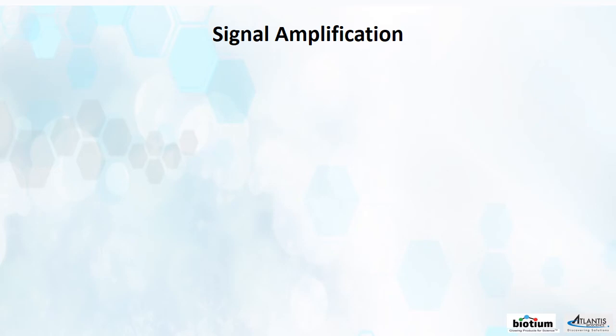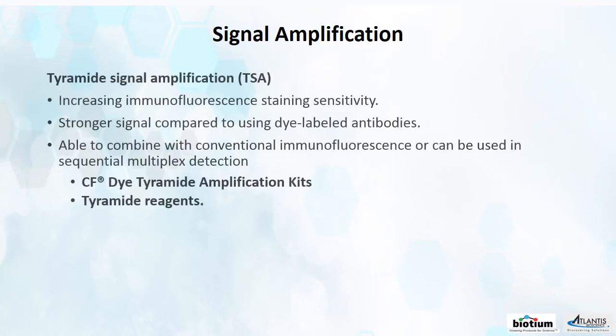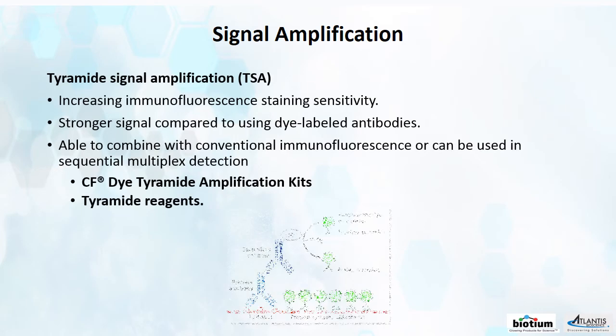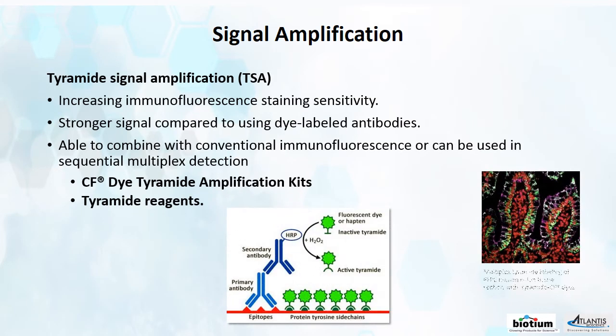Tyramide signal amplification is a powerful method for increasing the sensitivity of immunofluorescence staining. It gives a much stronger signal and can also be used in multiplex detection.